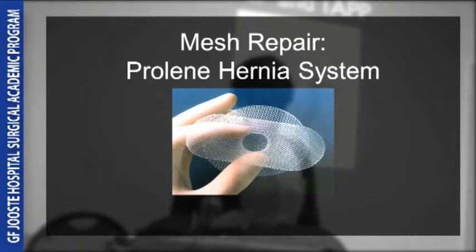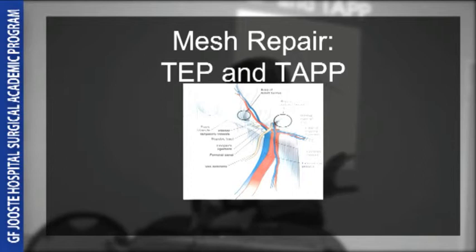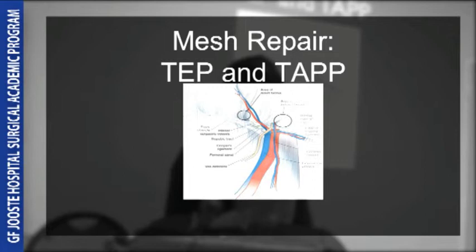There are two kinds of laparoscopic repair. The TEP — total extraperitoneal repair — involves taking the first port under the umbilicus and using a balloon to cleave a space between the peritoneum and the transversalis fascia before inserting two further ports and deploying a mesh. In a TAPP — transabdominal preperitoneal repair — you enter the peritoneum, open a flap to access the extraperitoneal space, insert your mesh, and then close the flap afterwards.